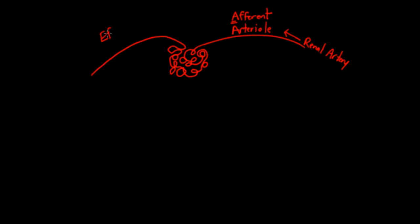And when it does, we call it the efferent arteriole. So that's how we keep straight whether it's coming or going from this little network of blood vessels.